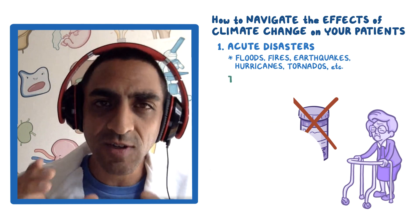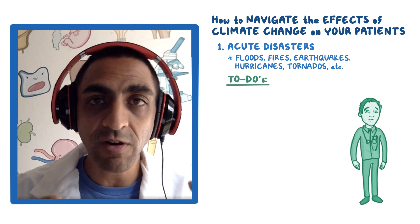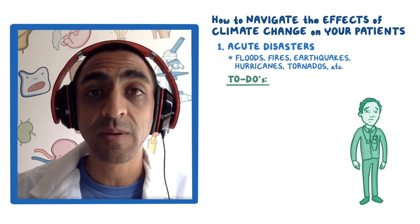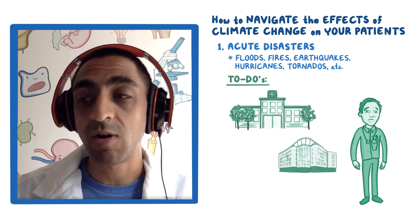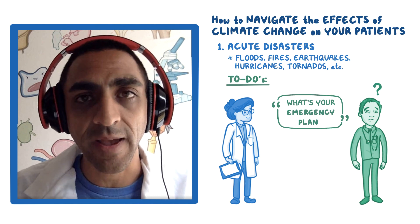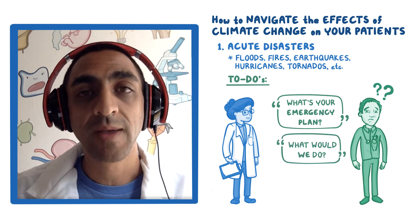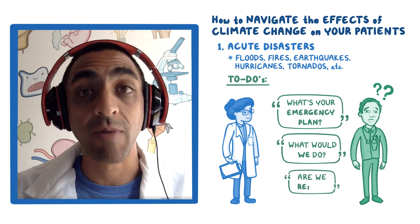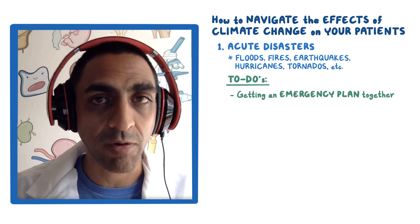In terms of to-dos for acute disasters: go talk to people at your hospital, skilled nursing facility, or hospice center and ask, what's your emergency plan? Walk me through it. Tell me what we would do as a facility if this were to happen, and are we ready? Getting an emergency plan together is very important.